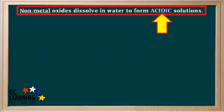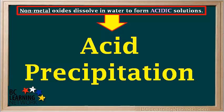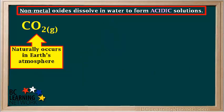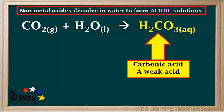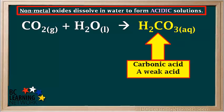Because nonmetal oxides dissolve in water to form acidic solutions, this gives rise to an environmental problem called acid precipitation, or acid rain. Carbon dioxide is naturally part of Earth's atmosphere and has been present long before humans. CO₂ in the atmosphere dissolves in rainwater to produce H₂CO₃, or carbonic acid, which is a weak acid. The presence of carbonic acid brings the pH of natural rainwater down to a value slightly below 7, usually around 5.6, as shown on the diagram.